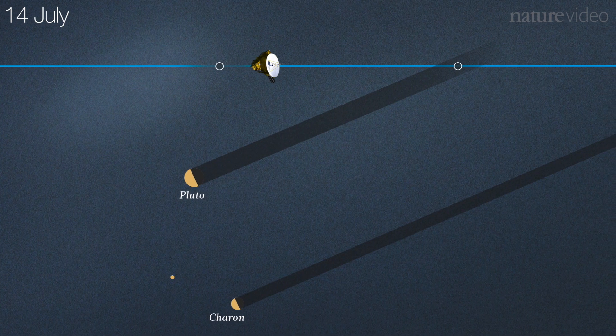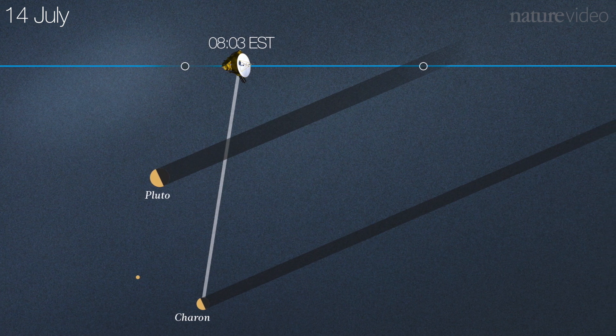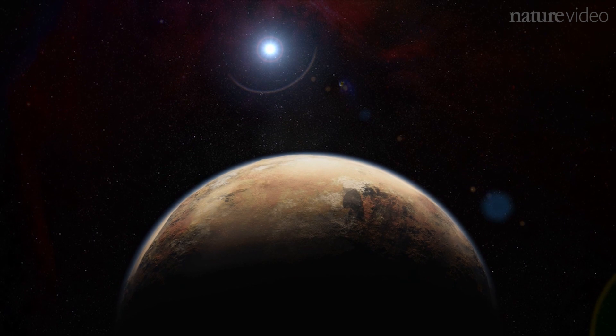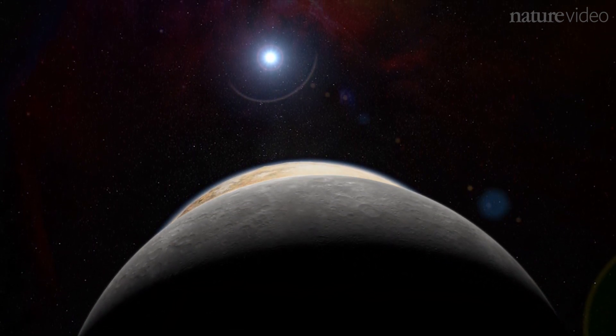Just 14 minutes after it passes Pluto, the spacecraft will arrive at Charon. Charon is half the size of Pluto and may be hiding secrets of its own.